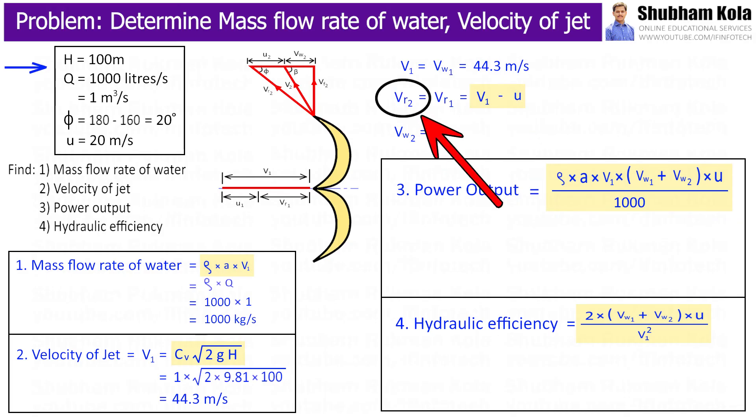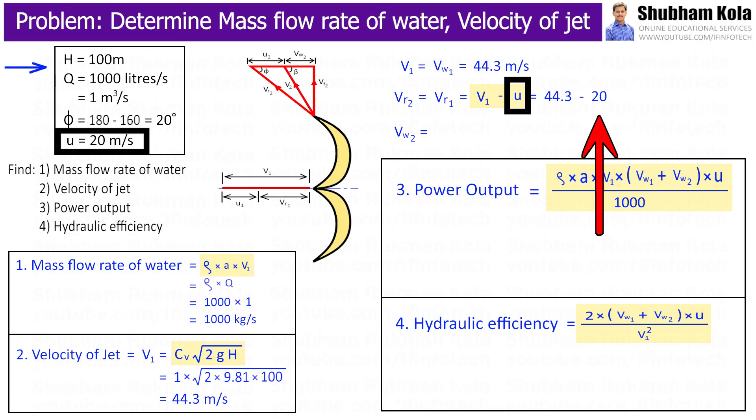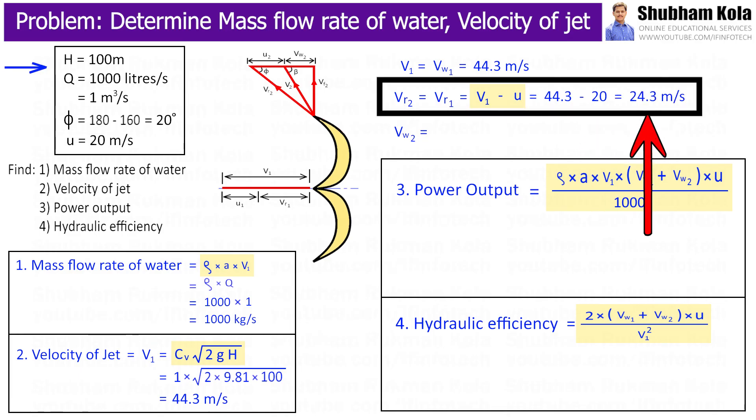And also, relative velocity at outlet Vr2 equals relative velocity at inlet Vr1. And it is given by formula V1 minus u, and V1 we have already calculated. And bucket speed small u is given in the problem. Therefore, we got relative velocity at outlet Vr2.